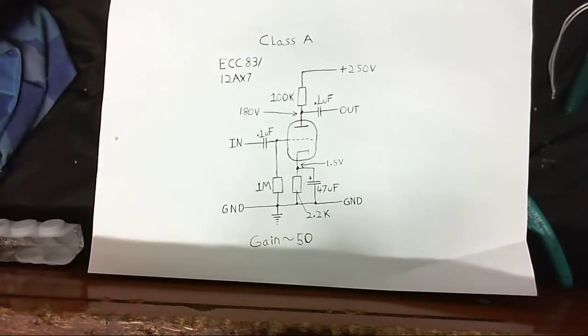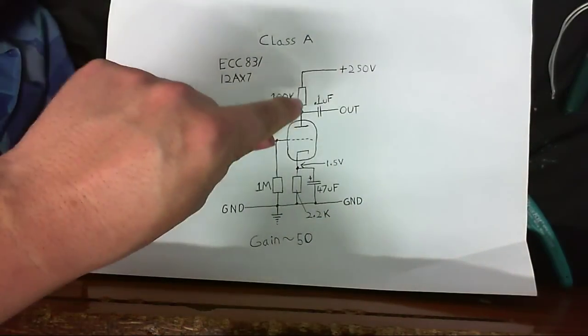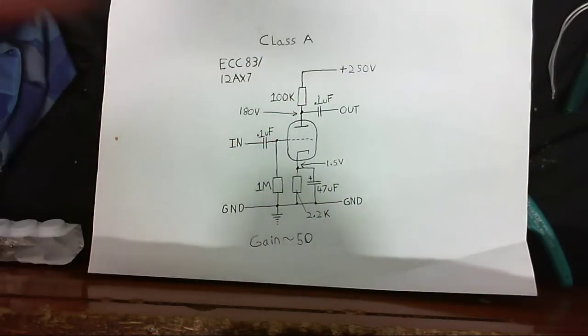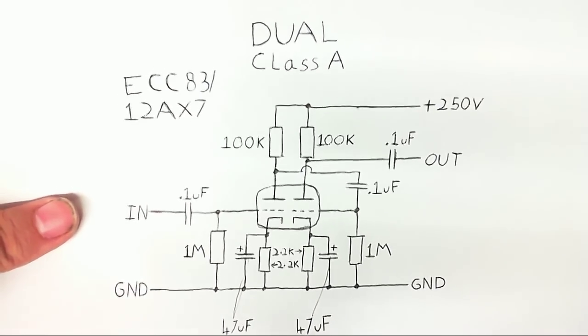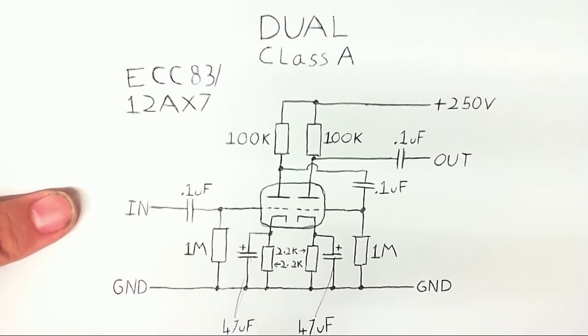Now I've got an idea. How about I put two of these class A preamps together? So this is the circuit. And I think this is going to give us lots and lots and lots of gain. So let's try it out.